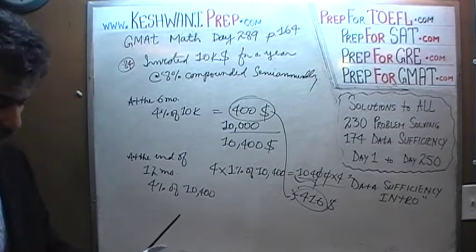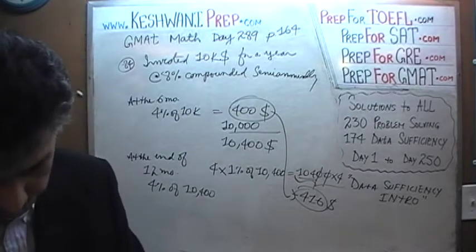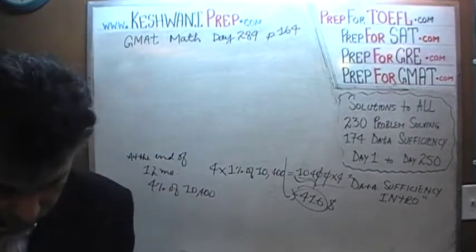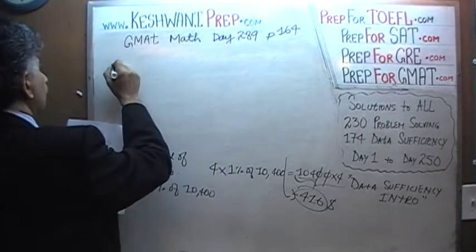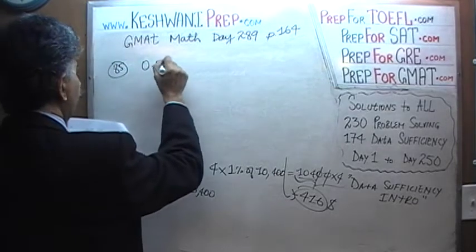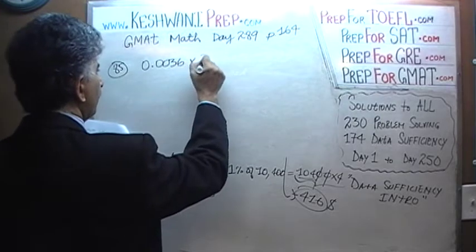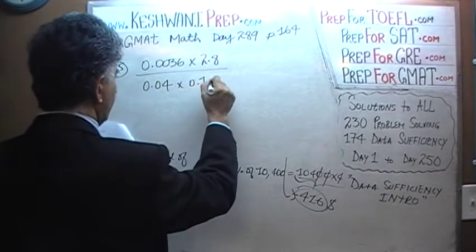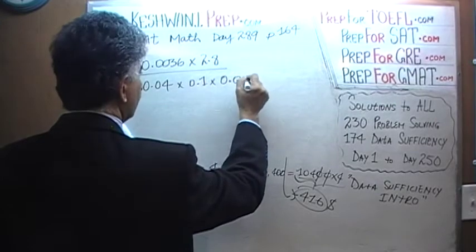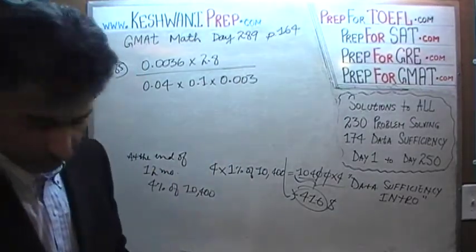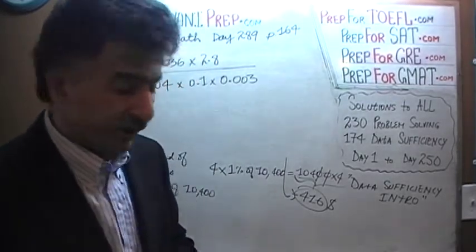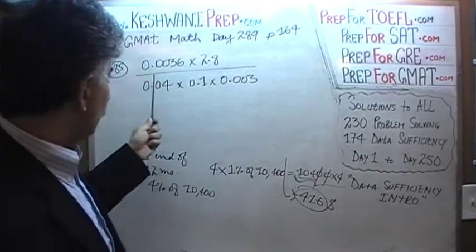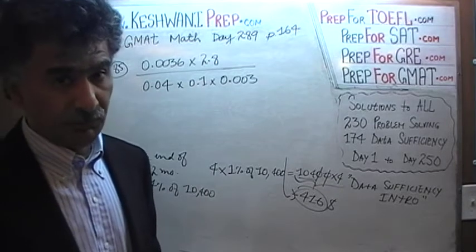Problem number 85: we have 0.0036 times 0.28 over 0.04 times 0.01 times 0.25. The simplest and quickest way to handle this is to convert these decimal numbers into whole numbers. Don't try to solve them as decimals — try to convert them into whole numbers.